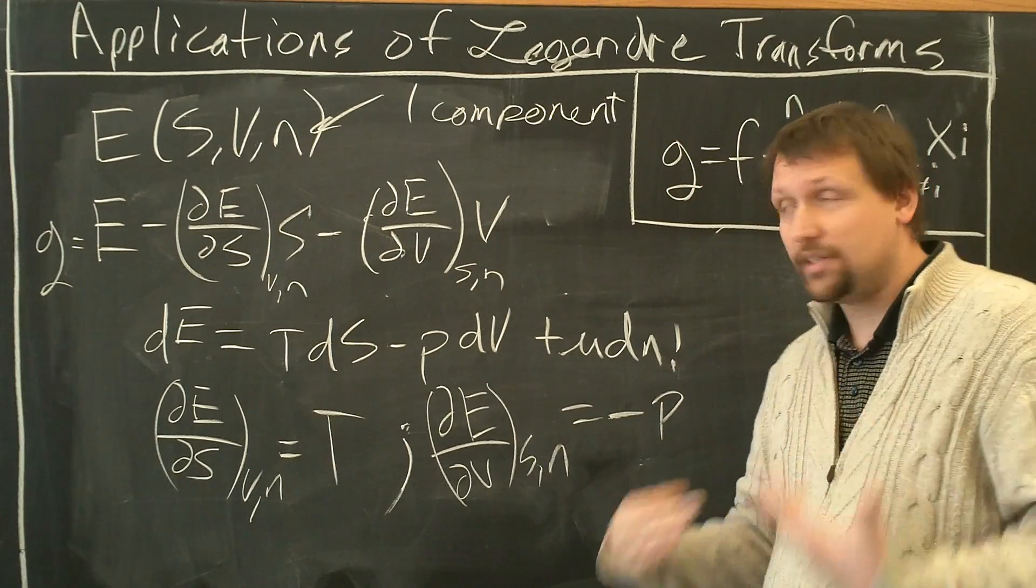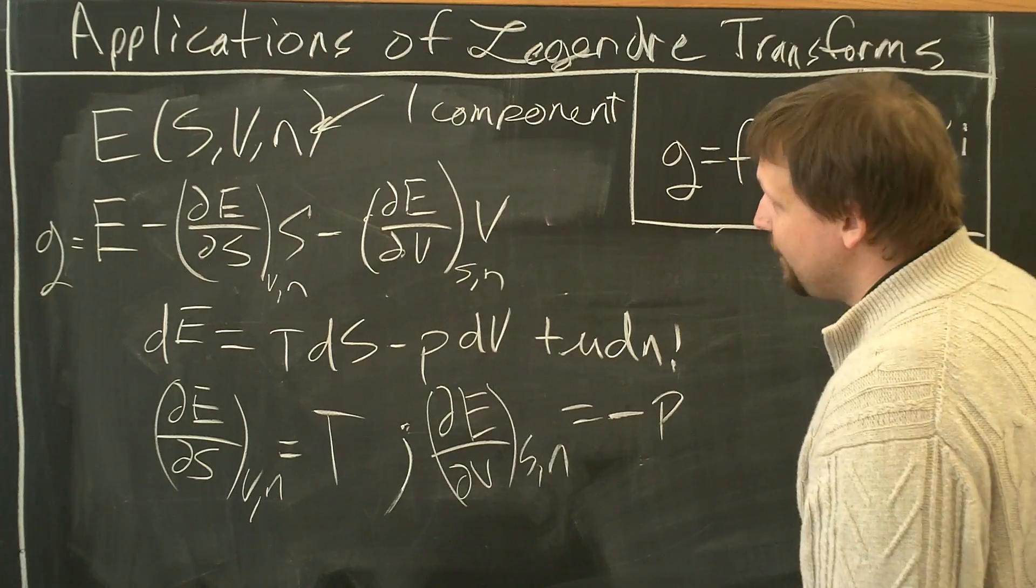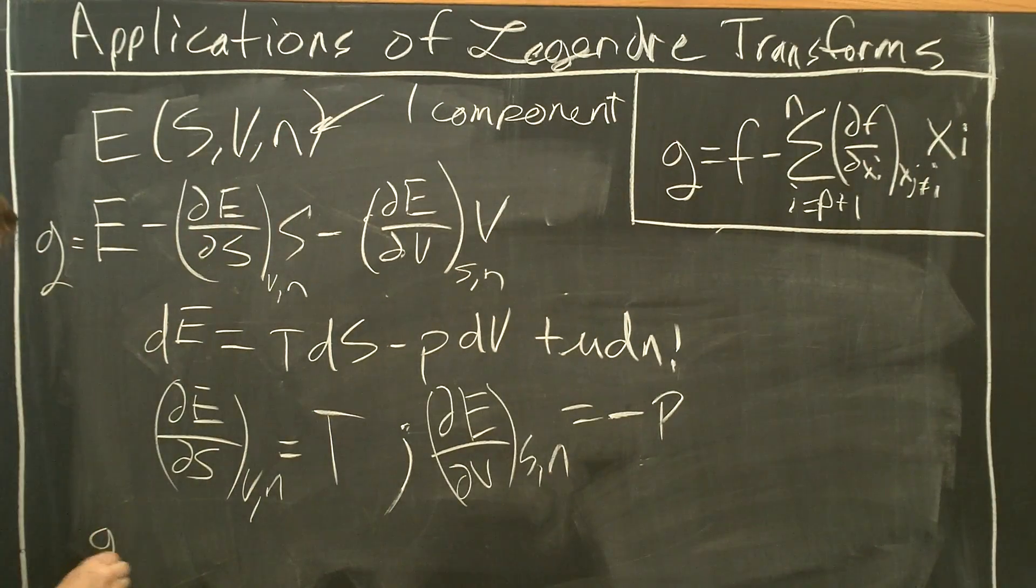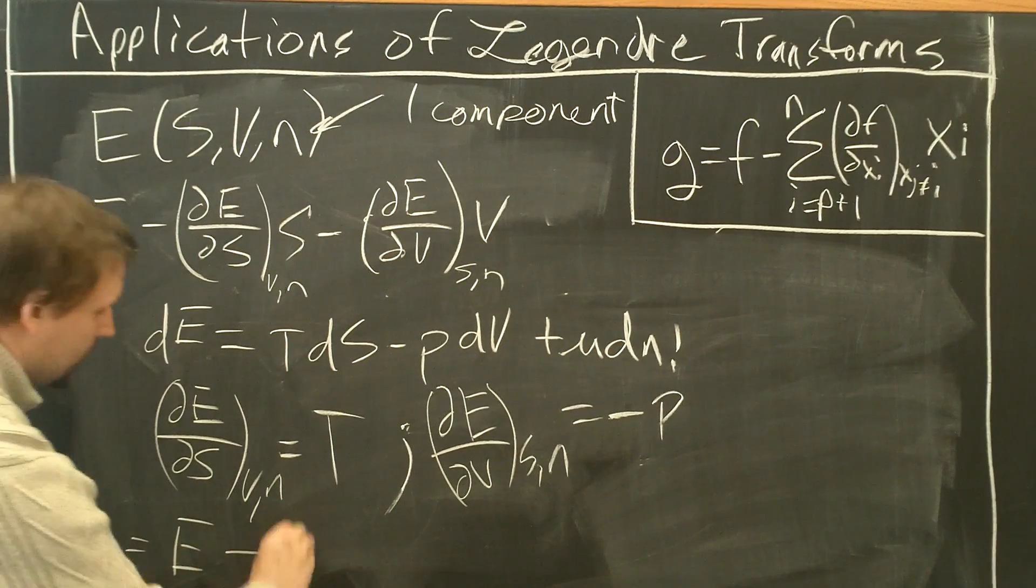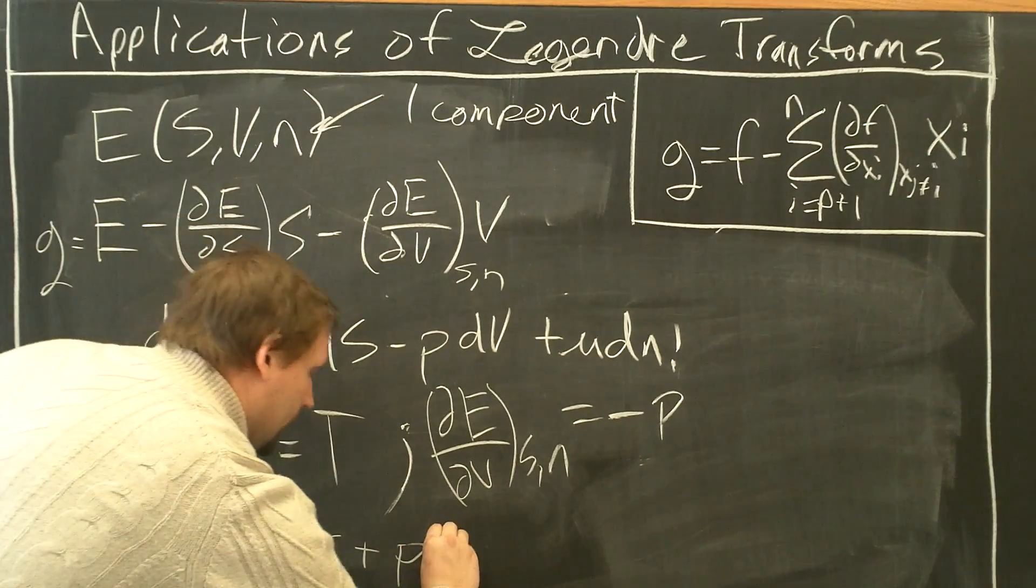So now we can substitute these back in to the equation above. We get a new state function, G equals E minus TS plus PV.